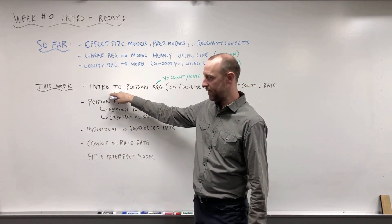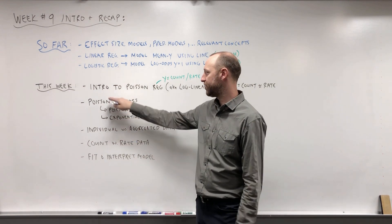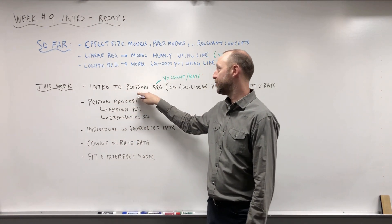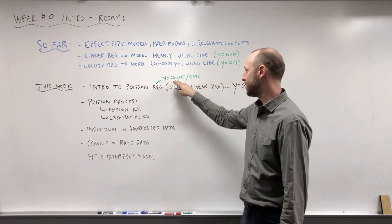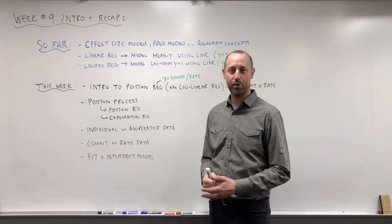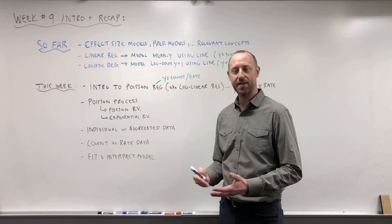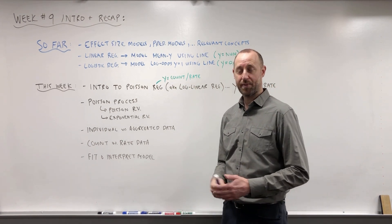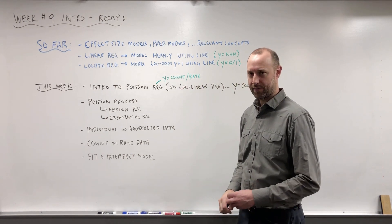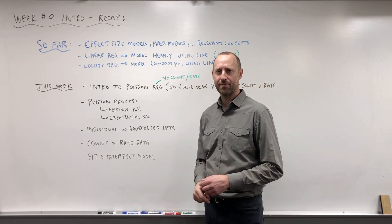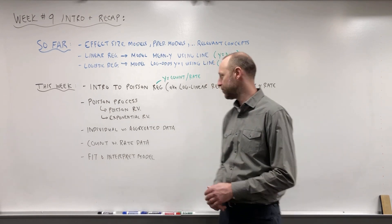So what we're going to do today, or in this week's set of lectures, is we're going to introduce Poisson regression. And again, that's where our outcome is a count or a rate. So counting how often something happens in a specified period of time, or the rate at which events occur. So birth rates, death rates, rates at which people contract diseases, these sorts of things.